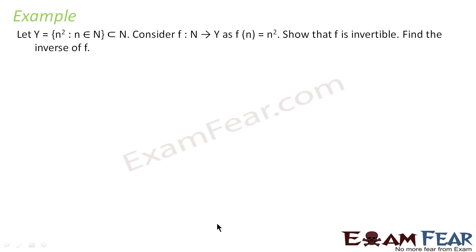Let us take another example. Let Y = {n² : n is a natural number}, a subset of the natural numbers. We have a function from N to Y where f(n) = n². We have to prove it is invertible and also find the inverse. Since we need to find the inverse, we will create another function g instead of just proving one-to-one and onto.